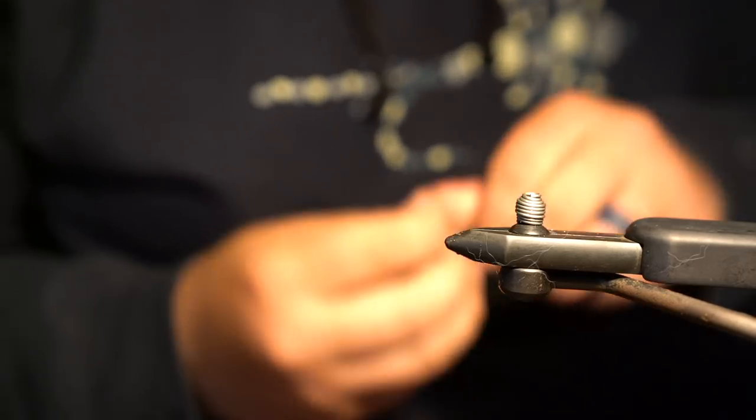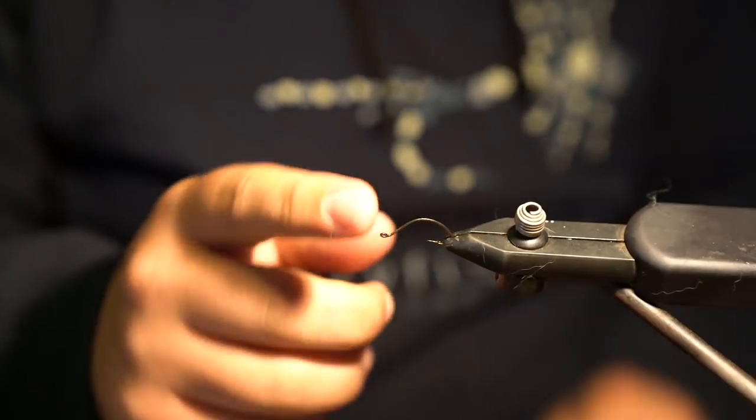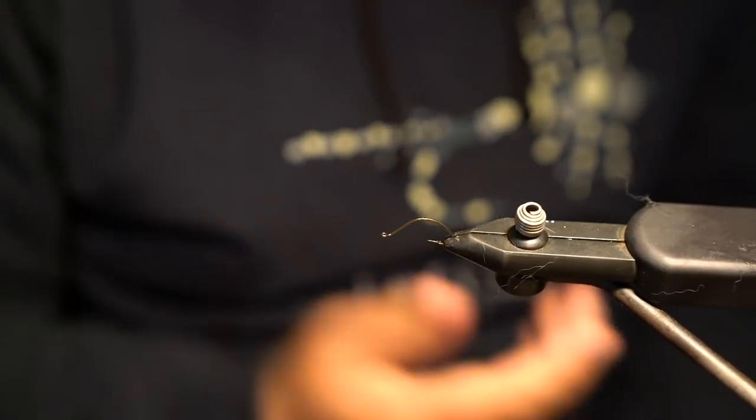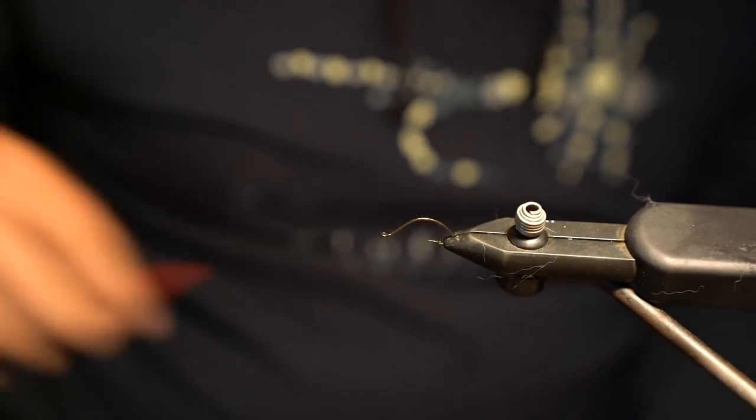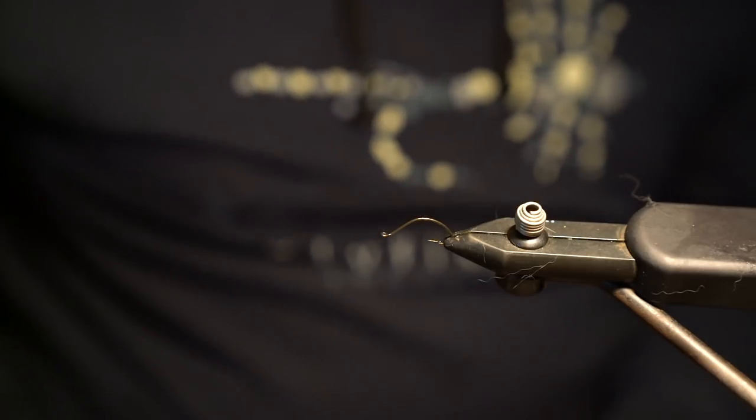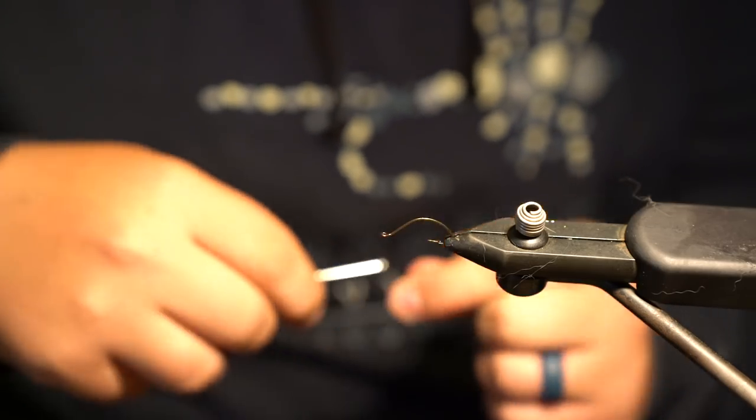So first off we're going to start with this leather worm. This is just a worm style hook. I actually don't know the name on it and the bag that I have is an off brand bag, so I can't even tell you what it is. But this fly is super simple. All you're going to do is lay down a little bit of a thread base.